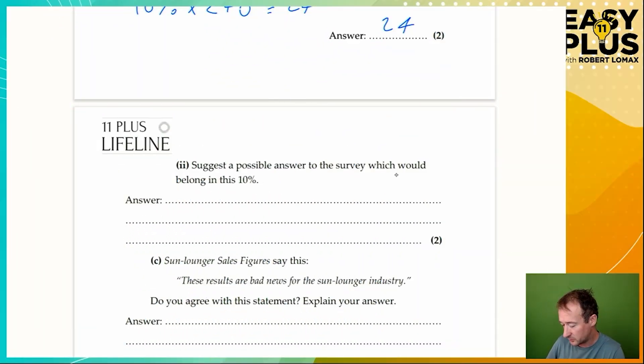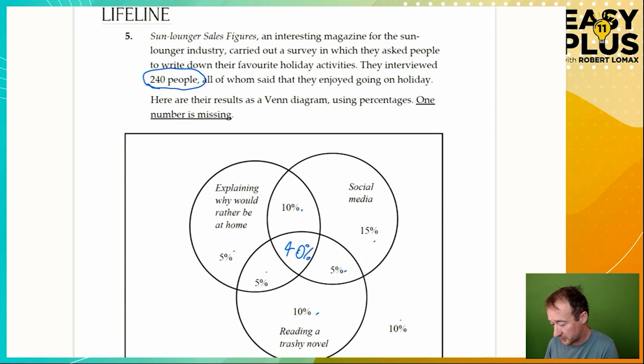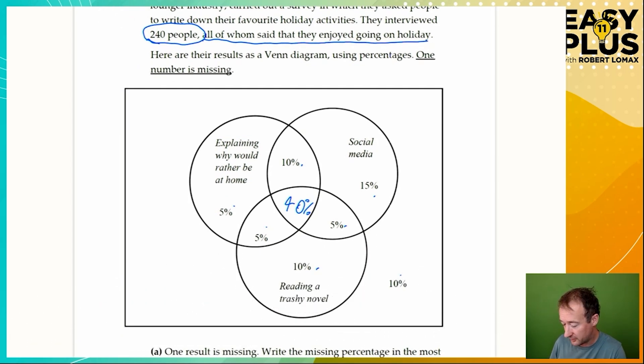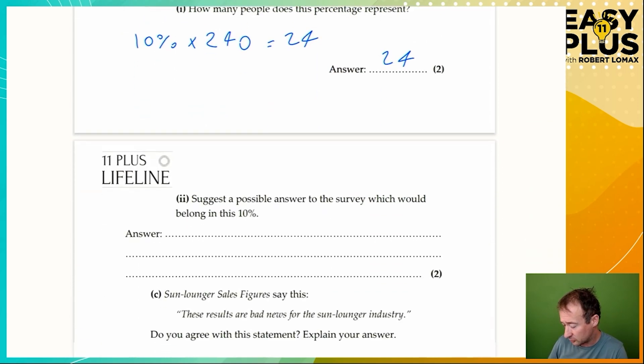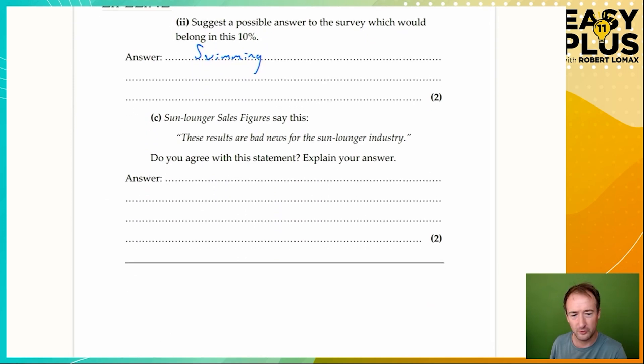Suggest a possible answer to the survey which would belong in this 10%. If they said any of the things described in these three circles, they wouldn't be out there. So this must be for a different answer. Could that be I don't enjoy anything about going on holiday? No, because we learned that all of them said they enjoyed going on holiday. These must be the people who've said that they enjoyed something else, and you could really say anything at all here. For example, swimming.